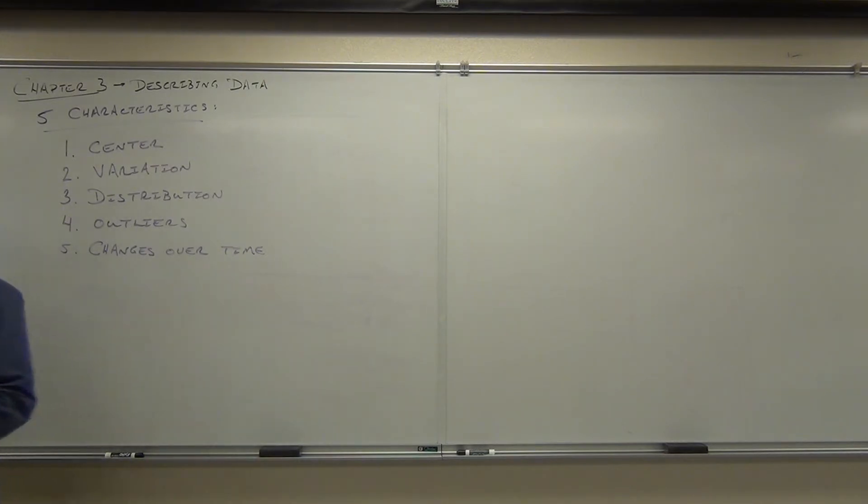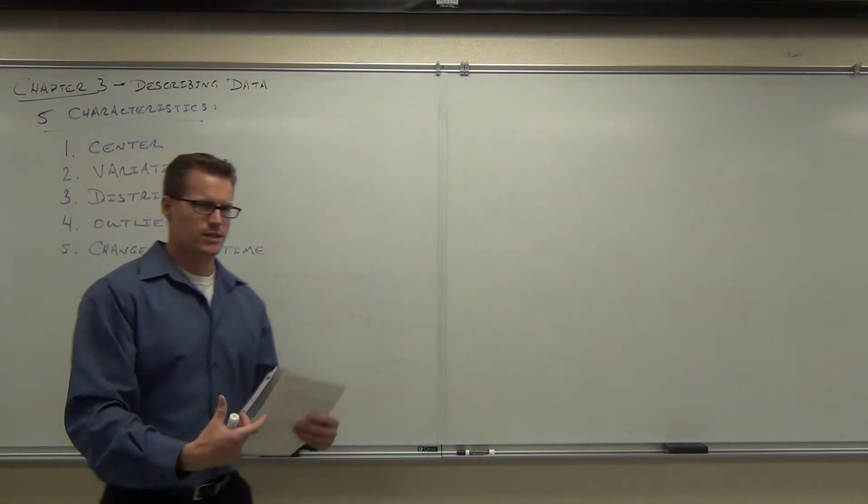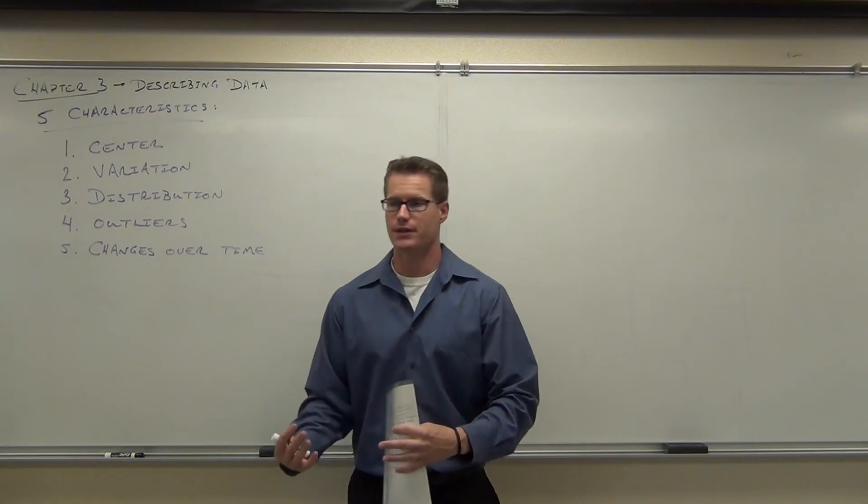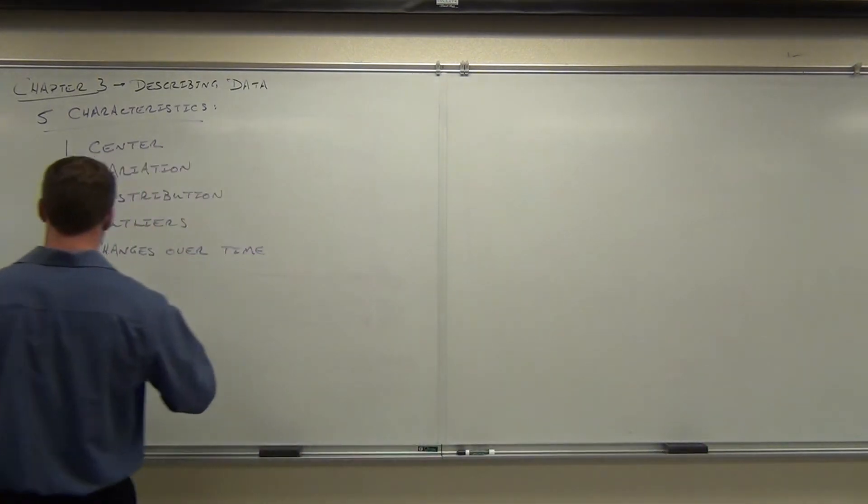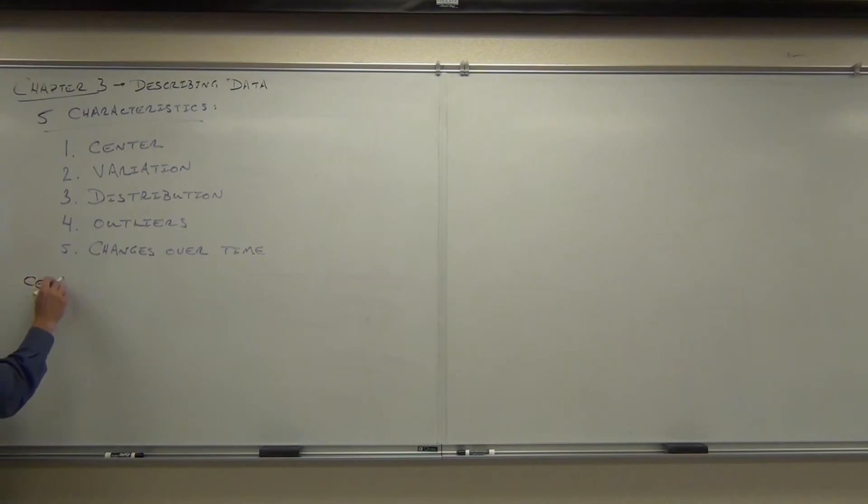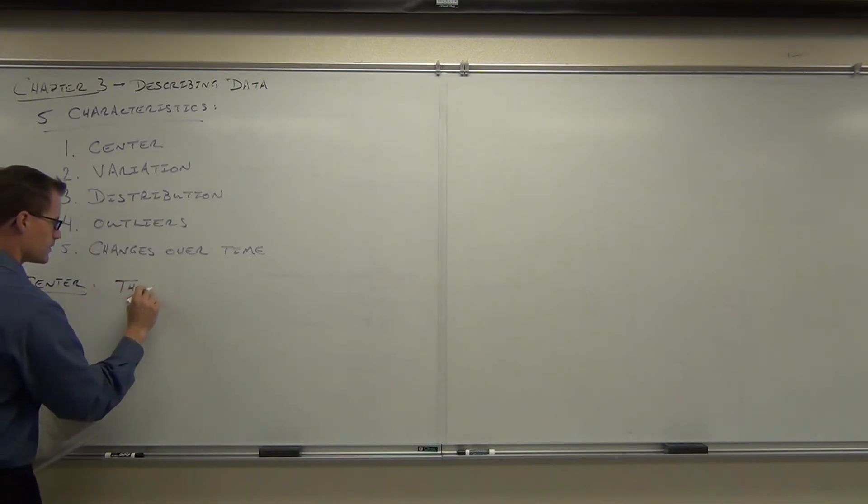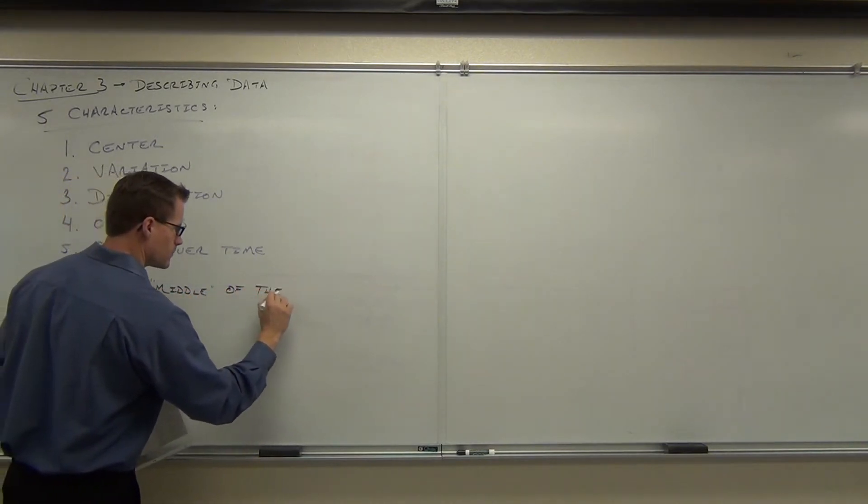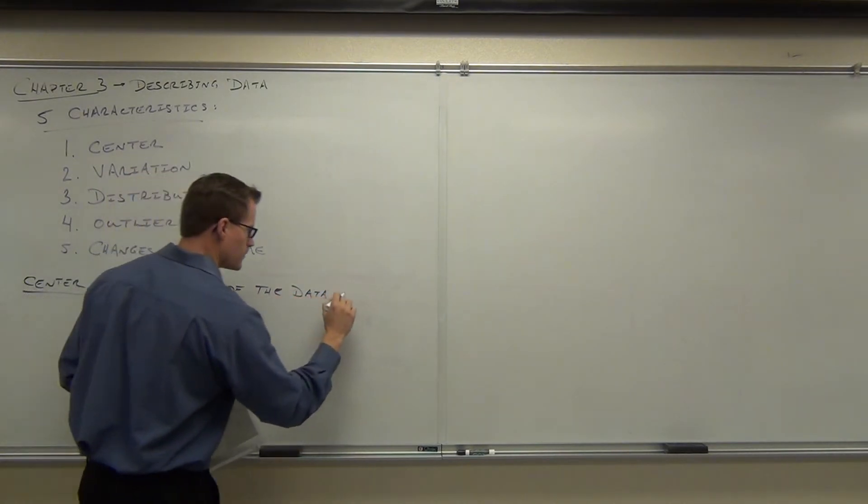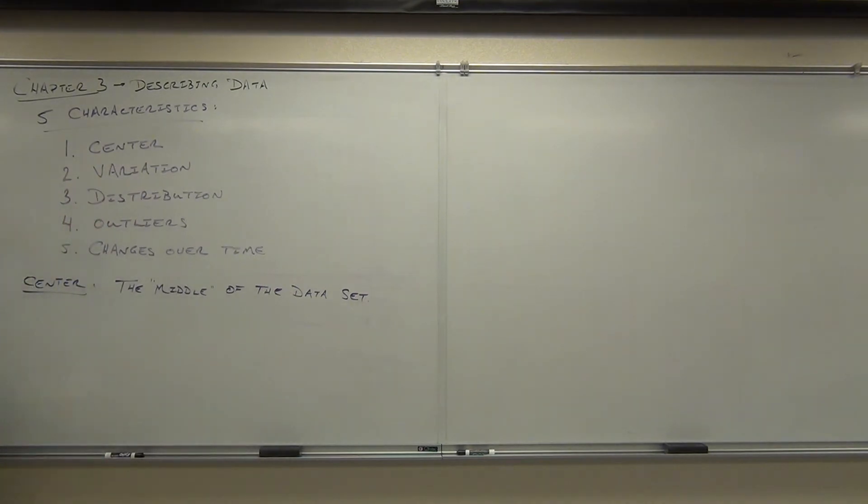Our first characteristic is center. And what we mean by center is really the middle of our data set. What's happening most often is usually what we think of when we say center. What value is most of the data surrounding? We can think of it like the middle of our data set. And really we have three ways of describing the center.